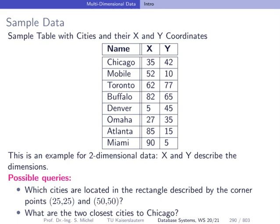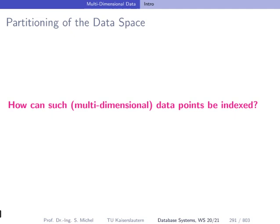Here's some sample data, also taken from the book by Hanan Samet. We have some cities here and two-dimensional keys, namely the x and y coordinates. Now we can ask following queries. For instance, we come up with a rectangle described by the corner points 25-25 and 50-50, and then we want to find all those cities located in this rectangle. Or we ask which are the two closest cities, the two nearest neighbors, to the city of Chicago.